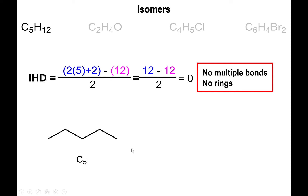Now decrease the length of the linear chain by one — we went with five, so now we use four carbons. The structure still has to have five carbons total, so you truncate the molecule and place the excess carbon somewhere in the middle. You place the fifth carbon there instead of at the end, giving you another possibility. The longest linear chain has four carbons, but altogether it has five carbons and 12 hydrogens.